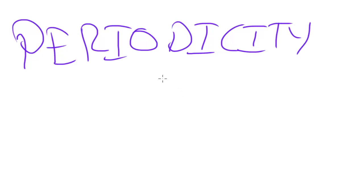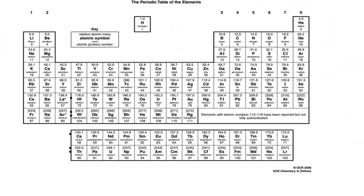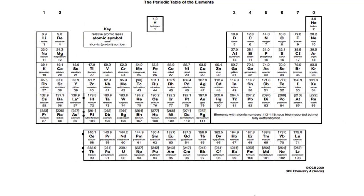Periodicity is the idea that there are repeating trends in physical and chemical properties as we go along the periodic table.